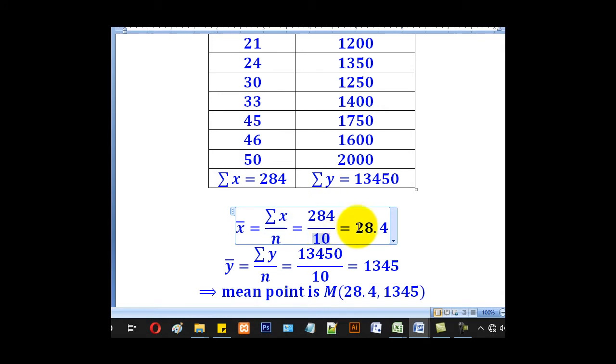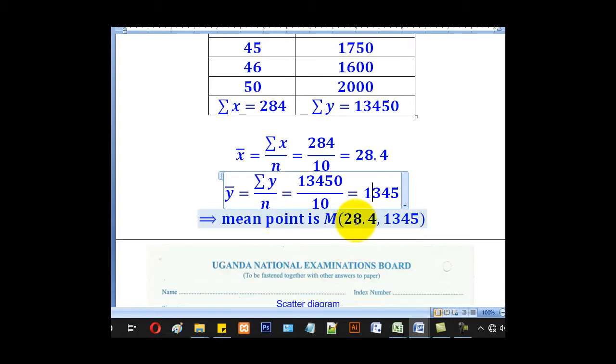So divide by 10, you get 28.4. Do the same for y, summation y over n, which is 13,450. Divide by 10, you get 1345. So our mean point capital M is (28.4, 1345).